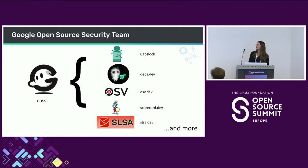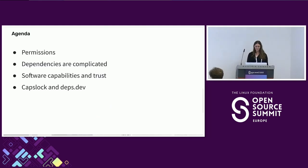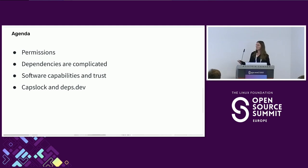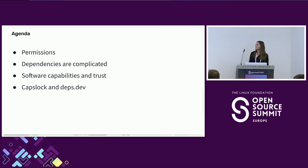Caps Lock is our static analysis project and Deps.dev is a website with information about dependencies. To give a brief overview of what I'm going to be talking about today: first I'm going to use a permissions type of model as a different approach for thinking about dependency management, then talk about why dependencies make this a complicated problem space, introduce the concept of software capabilities, and talk about how Caps Lock and Deps.dev can be used to solve these problems.